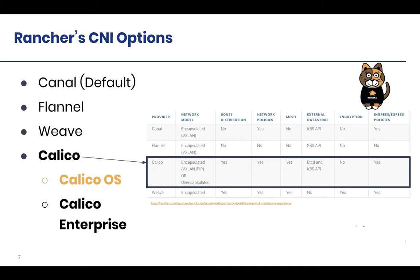To sum up: if you're deciding on a CNI based on your application requirements from a networking perspective as well as your infrastructure network requirements, those are some of the key areas to consider. That's a good summary provided by Rancher, and all of these are actually supported options — you don't have to manage them on your own. They're supported options by Rancher itself.